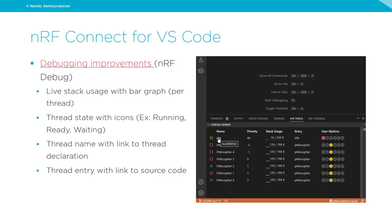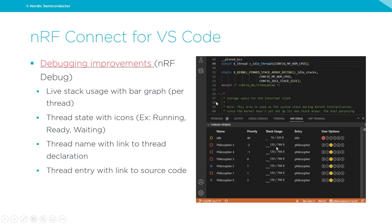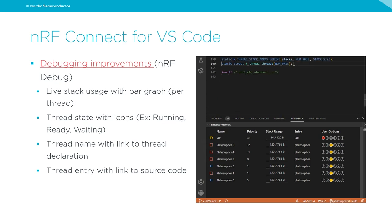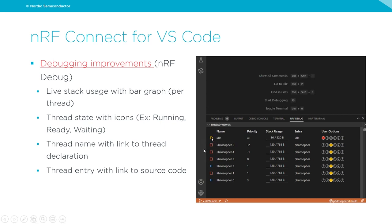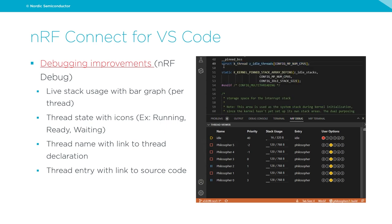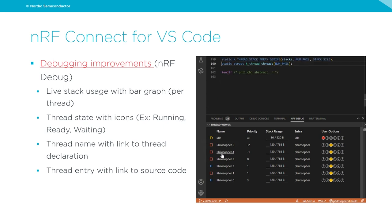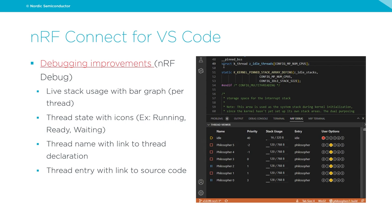Switching gears to NRF Connect for VS Code, we've made several improvements to the debugging experience within the default debugger, NRF Debug. In the thread viewer, live stack usage per thread is displayed with a bar graph — vital information for optimizing thread stack allocation. Icons to the left of the name column represent the state of each thread based on Zephyr RTOS thread state terminology. Developers can now see which thread is currently running, which are in the ready state, and which are waiting or suspended.